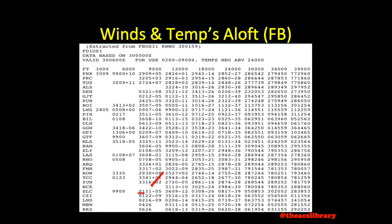The first two digits of each item is the wind direction relative to true north rounded to the nearest ten with the zero at the end lopped off. The second two digits are the wind speed depicted in knots. Following is a plus or minus sign and the two-digit temperature in degrees Celsius. Altitudes above 24,000 feet will all be negative temperatures and the plus or minus sign will be absent. The winds at 9,000 feet MSL above Salt Lake City International are from heading 010 at 11 knots with a temperature of negative 5 degrees Celsius.